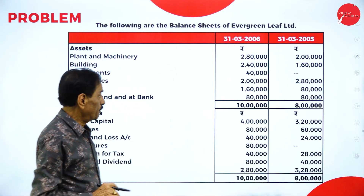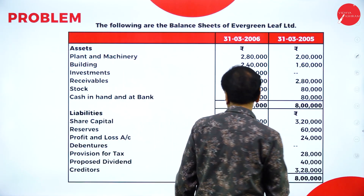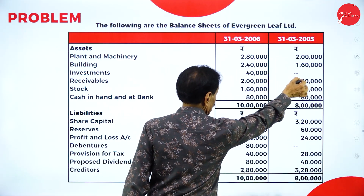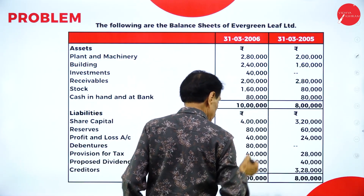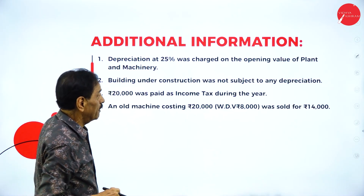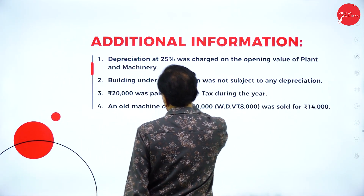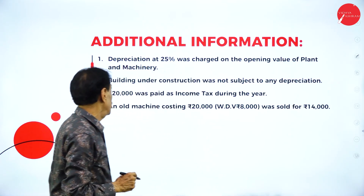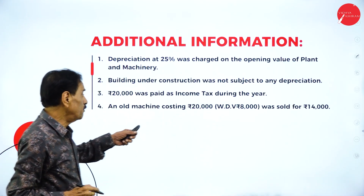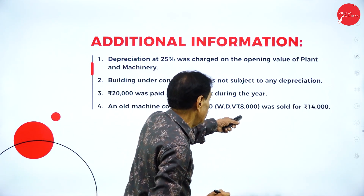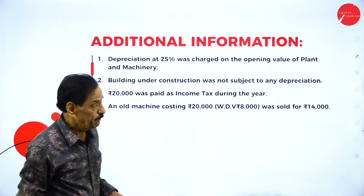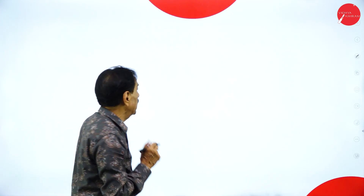We will move on to the problem. They have given the balance sheet of 2005 and 2006. Some adjustments: 25% depreciation was charged on opening value of machinery; a building under construction was not subject to any depreciation; 20,000 was paid as income tax during the year; and an old machine costing 20,000, written down to 8,000, was sold for 14,000.